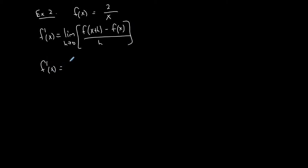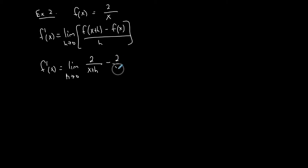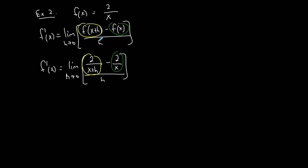I'm going to go straight in — replacing x with x plus h in my original function f of x equals 2 over x. So f of x plus h is 2 over x plus h. Then minus f of x, which is 2 over x, all over h. Here's my setup: 2 over x plus h is f of x plus h, and 2 over x is f of x.